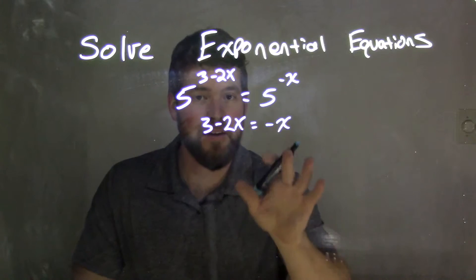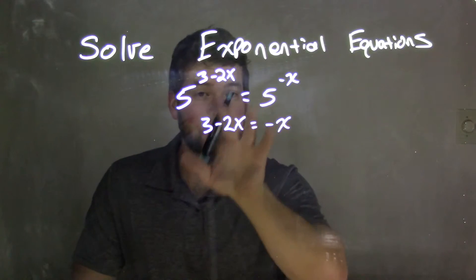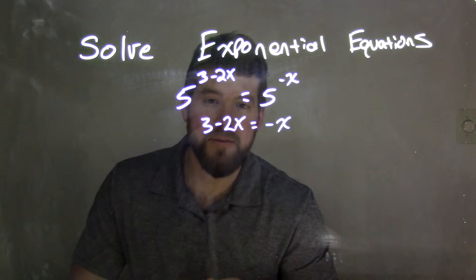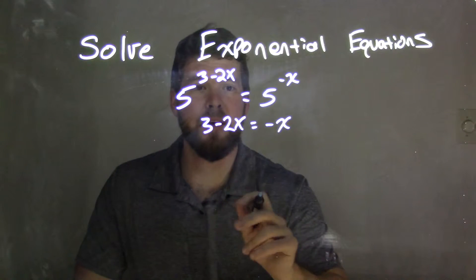Because we have the same base, we can just set the exponents equal to each other and almost like ignore that base. So now we have 3 minus 2x equals negative x.